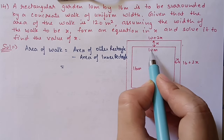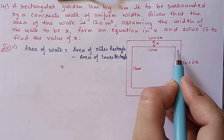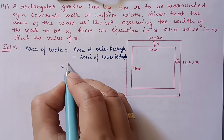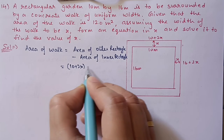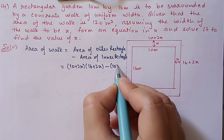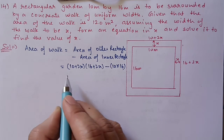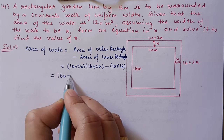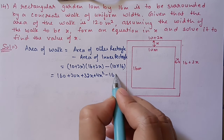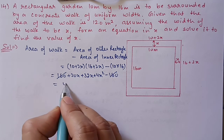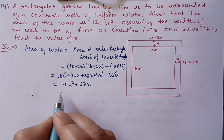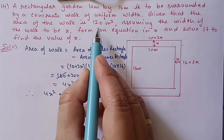Area of walk equals area of outer rectangle minus area of inner rectangle. The outer rectangle length is 10 + 2x and width is 16 + 2x. The inner rectangle is 10 by 16. So: (10 + 2x)(16 + 2x) − 10 × 16 = 160 + 20x + 32x + 4x² − 160 = 4x² + 52x.